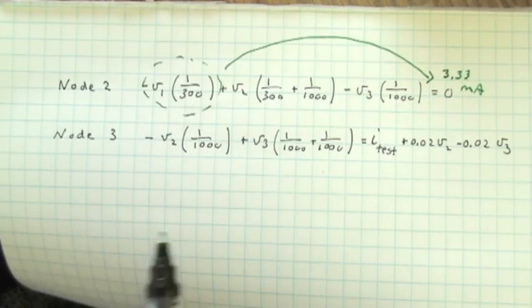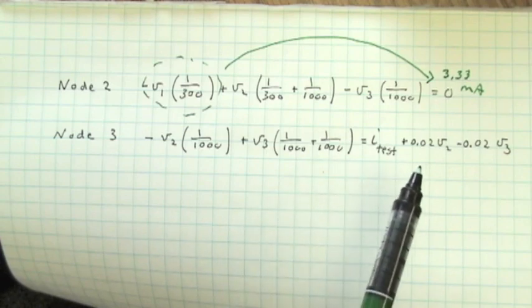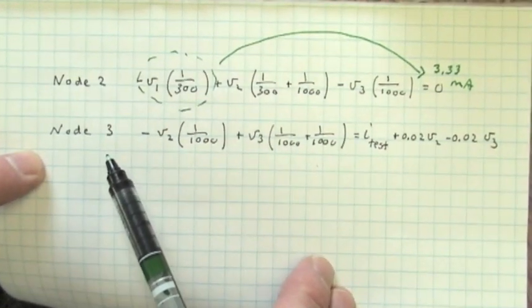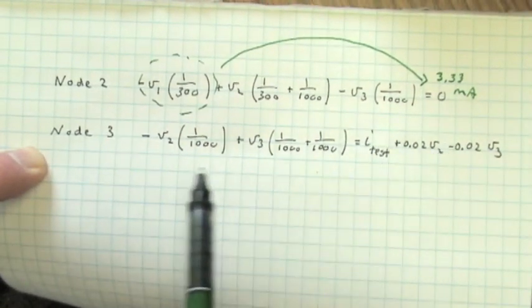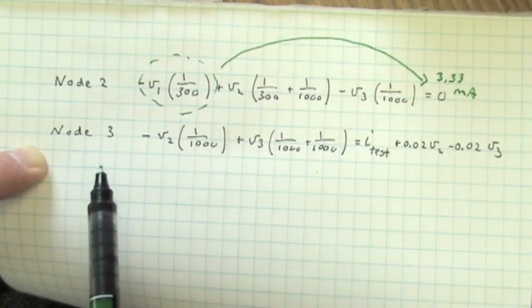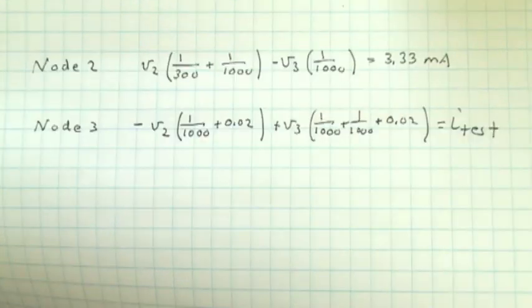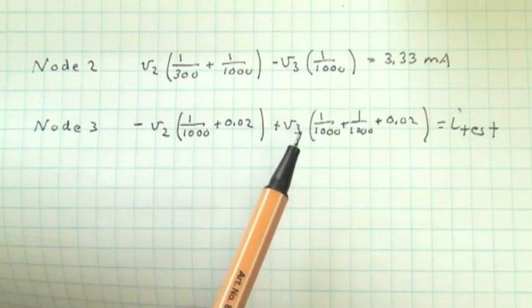V2 can be taken to the left-hand side of the equation and V3 as well can be taken to the left-hand side of the equation. So let's do that and rewrite these equations. And so after collecting those terms, we have these equations for the node voltage.